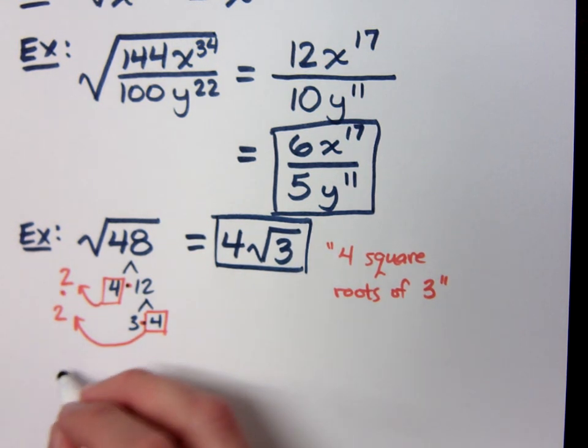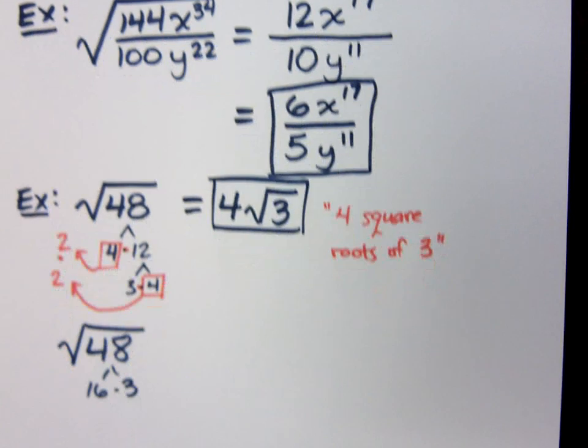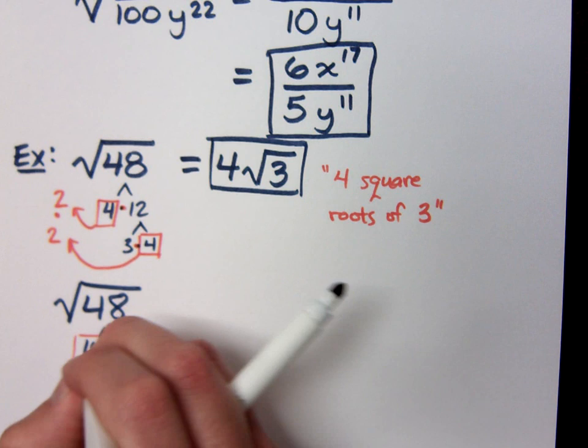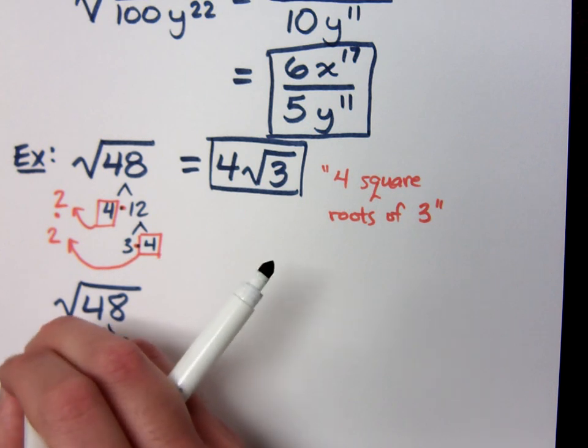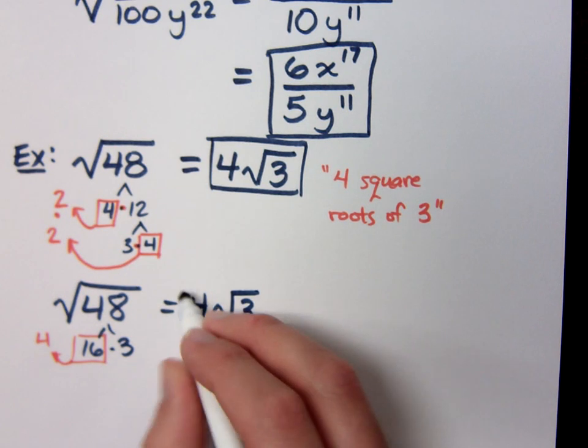Did you know that you also could have written this guy as 16 times 3? And since we know that 16 is a perfect square, he gives you what? You would still get 4 square roots of 3.